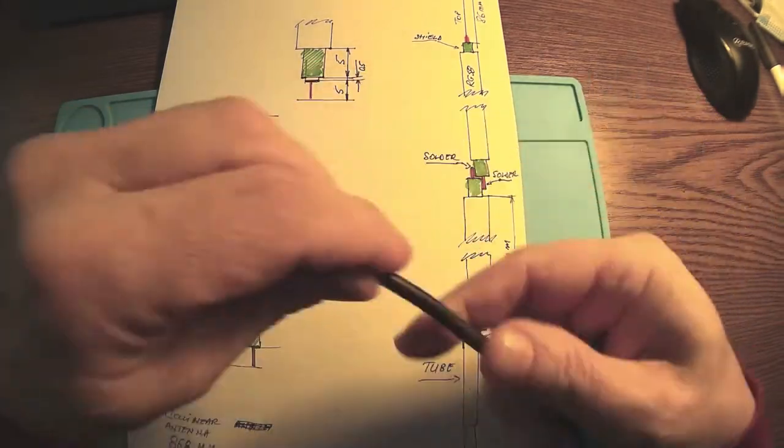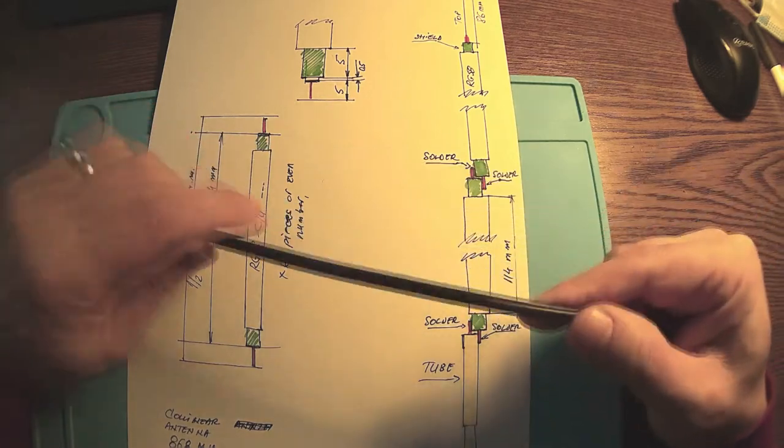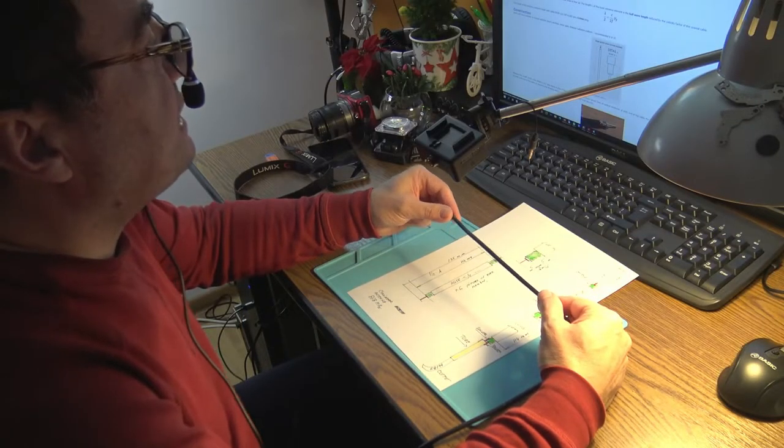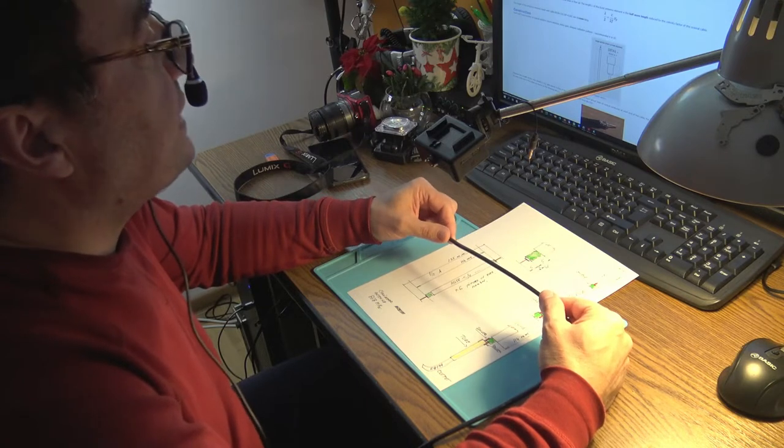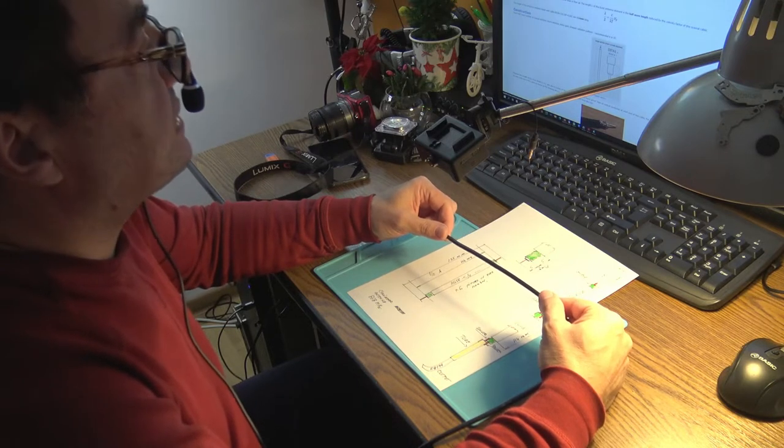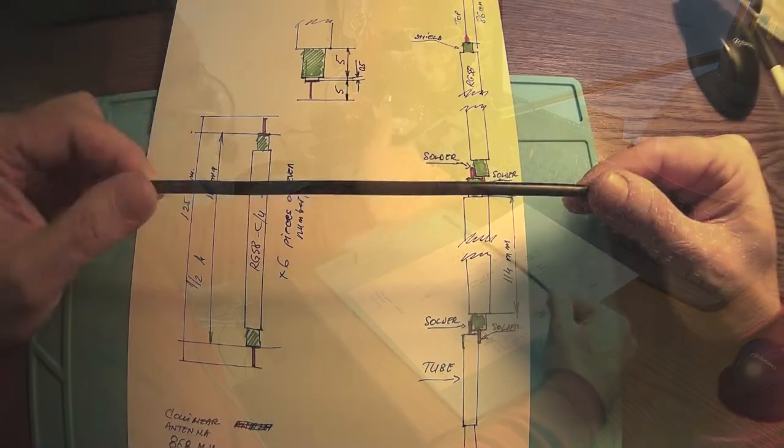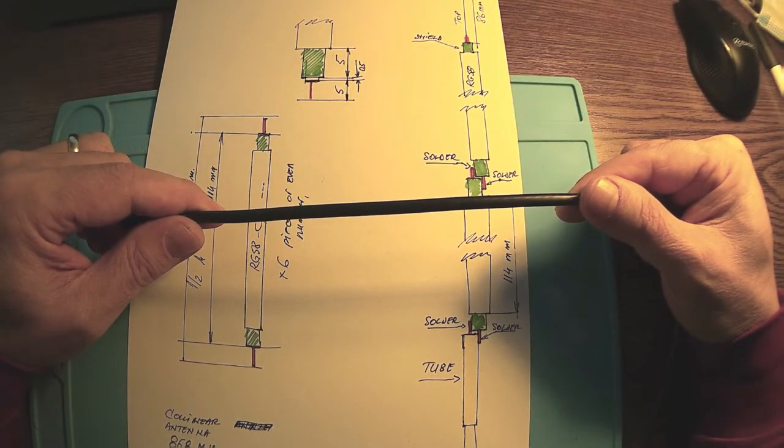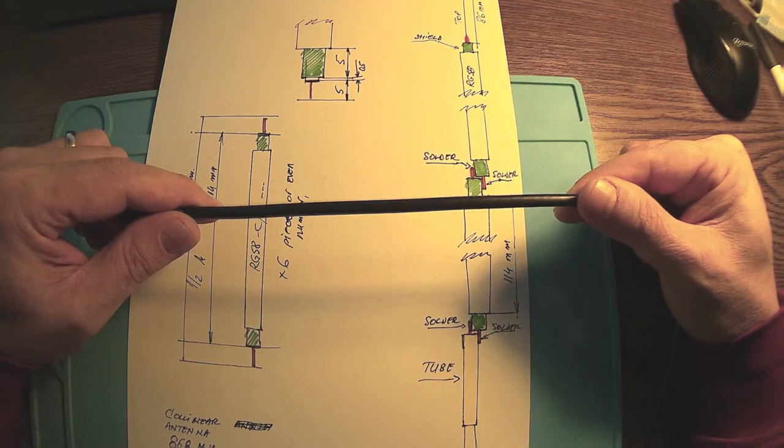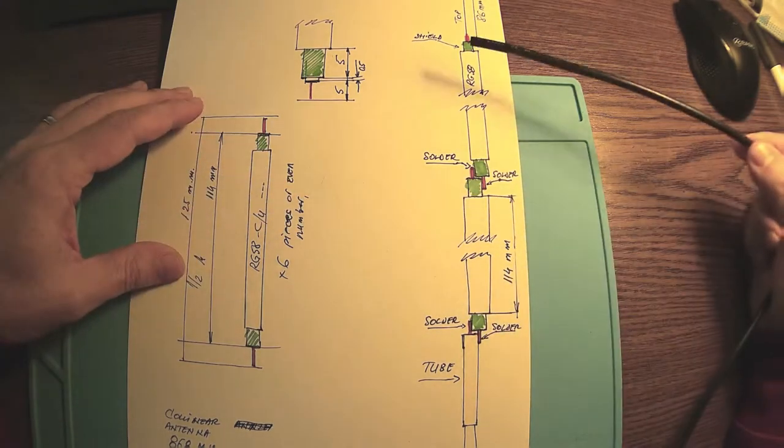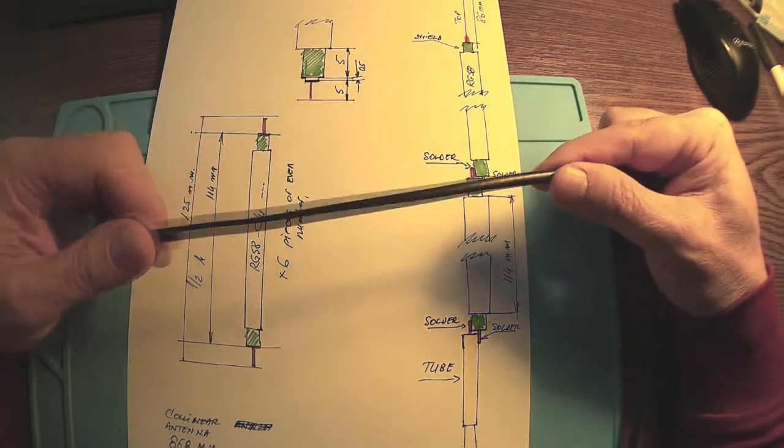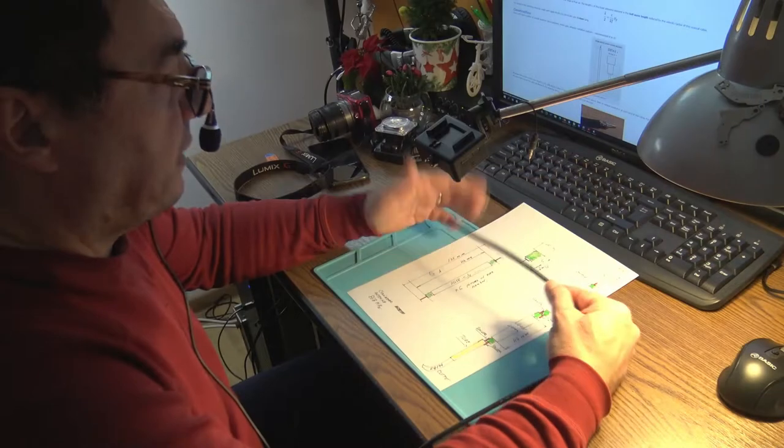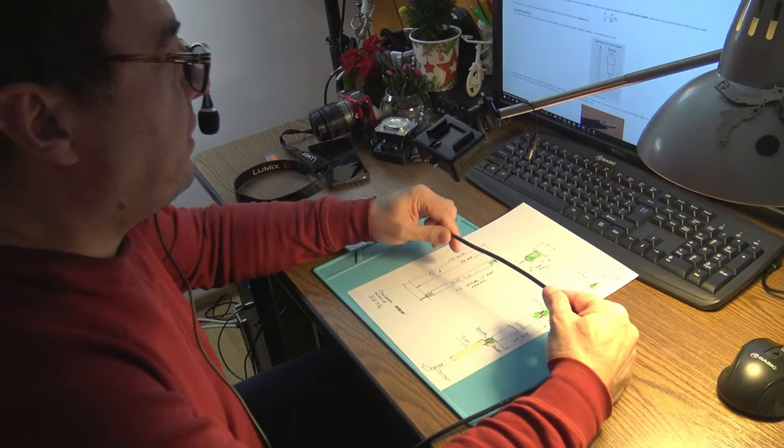This is the classic RG 58. This cable has a velocity factor of 0.66. And if we take all the mathematics related to the wave and the frequencies, I realize that finally I'm going to have some parts, an even number. In my case, it will be six. It can be eight, it can be four, but six I think is something in the middle.